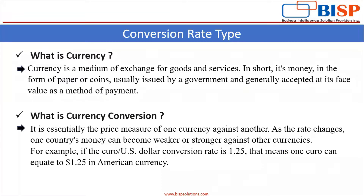Now, what is currency conversion? It is essentially the price measure of one currency against another. As the rate changes, one country's money can become weaker or stronger against the currency of another country. For example, here 1 Euro is equal to a number of units of US dollar. You can see the quote here — Euro per US — but it means 1 Euro equals a number of units of US dollar.